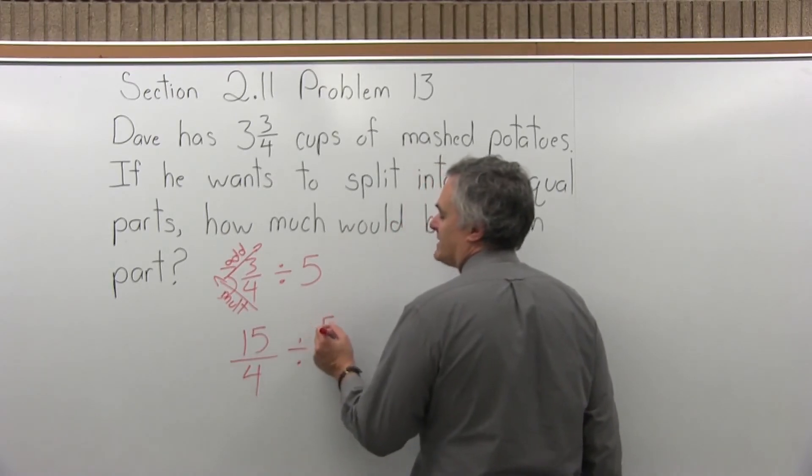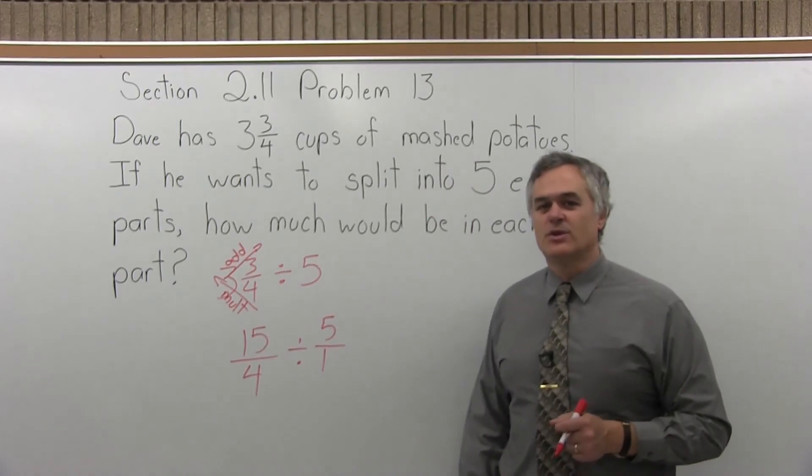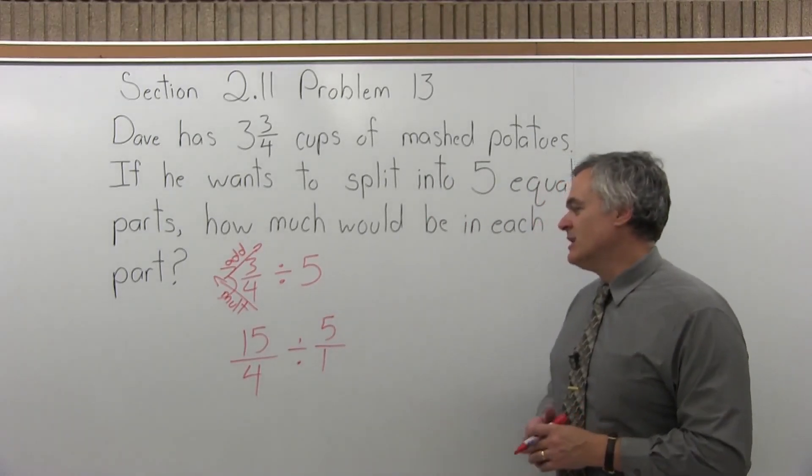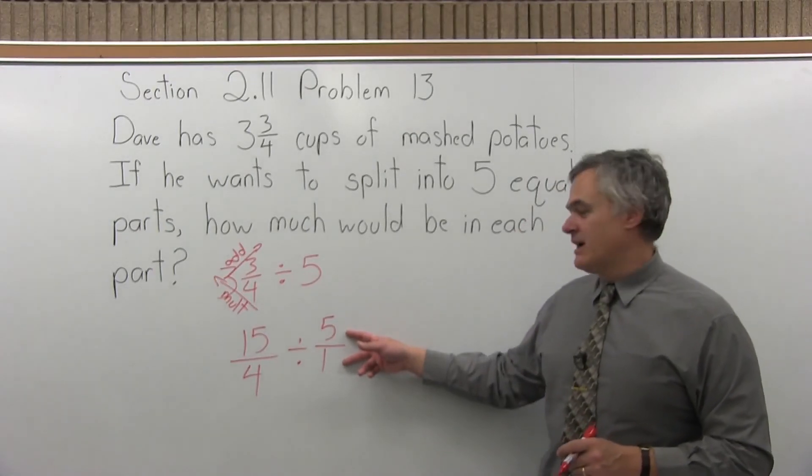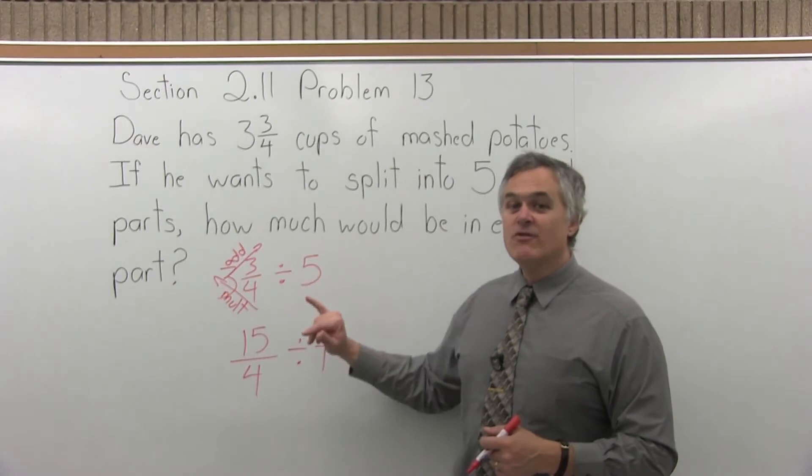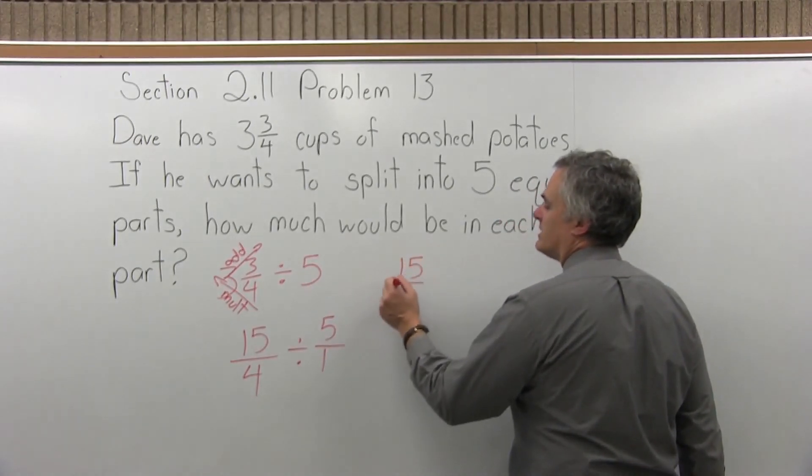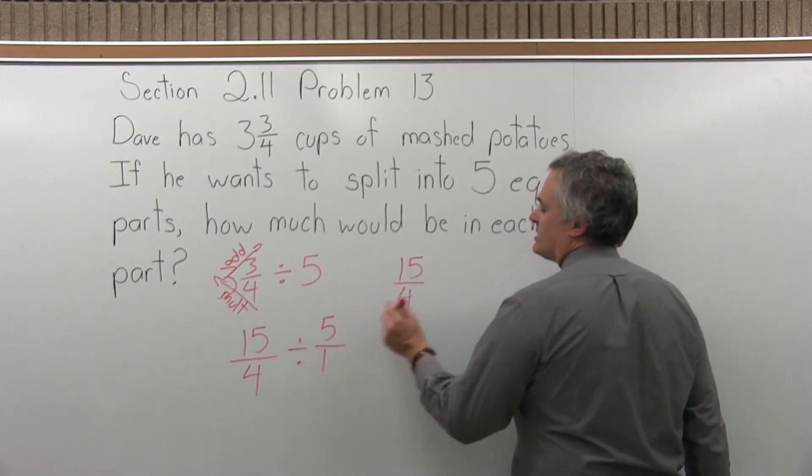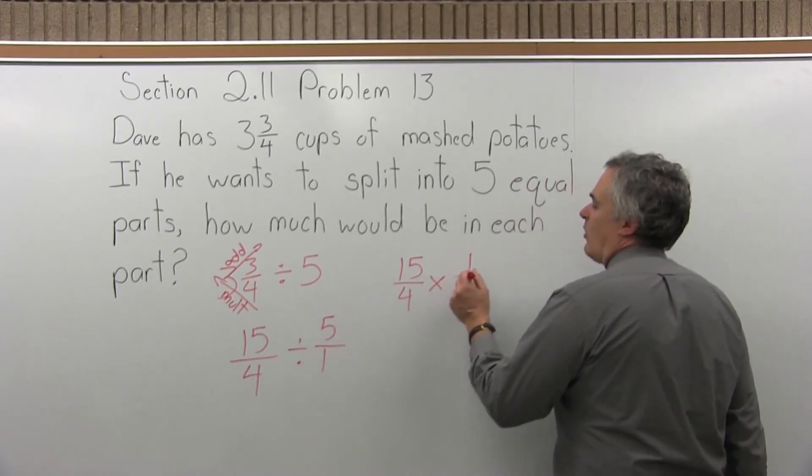It's divided by, the five is going to have to be written as five over one to continue with the process of the division. Now that I have a separate top and bottom for the five, now I can convert this to a multiplication and invert that five over one. So the fifteen over four, we'll stay the way it is, the operation becomes a multiply. The second fraction is written one over five.